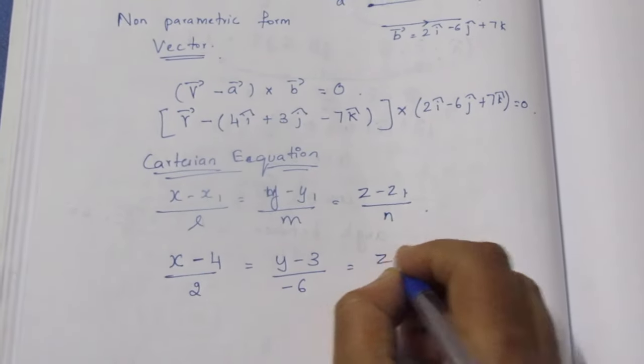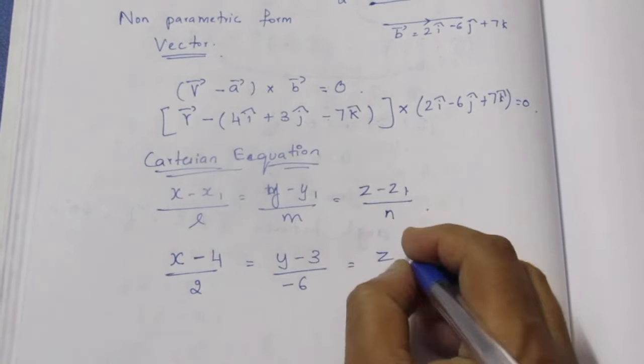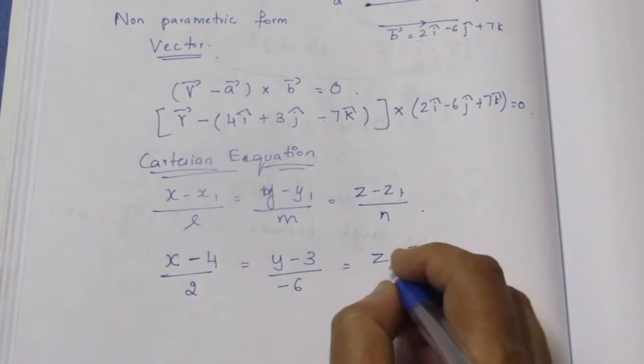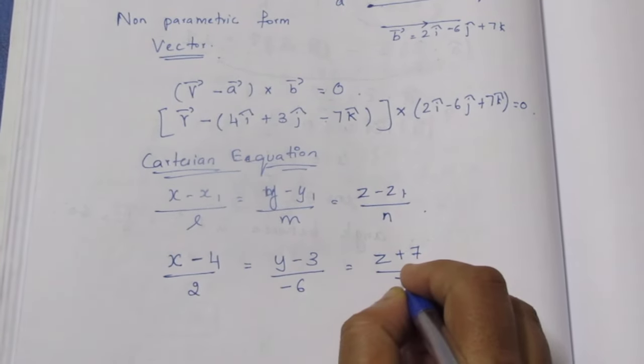Z equal to Z minus of minus, Y minus is there, plus is plus, is plus 7. A will be above, B will be above.